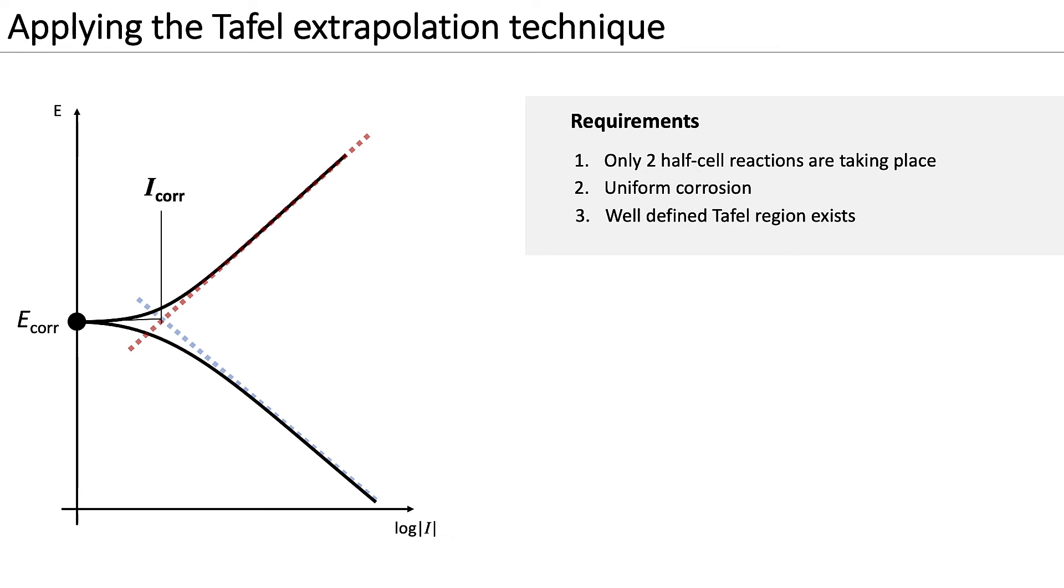This means that we must have clear linear regions from which we can determine and extrapolate the Tafel slopes. Ideally, these regions are purely activation controlled, and thus linear in the logarithmic plot. To capture this linear part, generally the Tafel region should be measured over at least one decade of current.